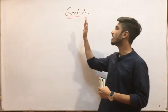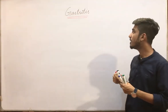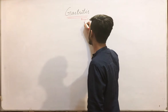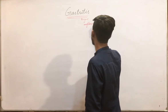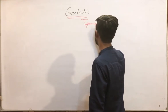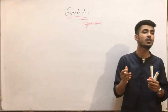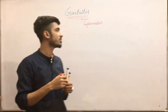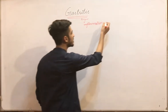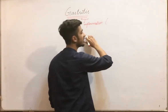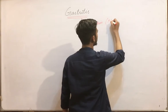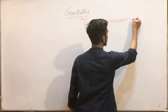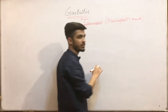Starting with gastritis. As its name indicates, 'itis' means inflammation — so gastritis means the inflammation of the gastric mucosa. If the inflammatory cells present are neutrophils, it means that it will be acute gastritis.